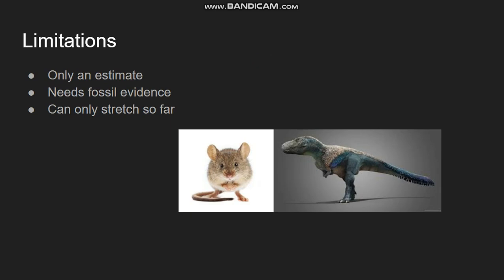Now, the molecular clock does have several limitations. The primary one is that it's only an estimate — not all species conform to the projections of the molecular clock, and it just doesn't always work 100% accurately. The second limitation is that it needs fossil evidence, and fossil evidence isn't always easy to find or accurately date, so it can easily introduce error. The third, and probably the largest limitation, is that the extrapolation can only stretch so far. Different species evolve at different rates, and while similar species evolve at similar rates, the farther away you go phylogenetically from the original species you calculated the rate for, the less accurate the clock becomes.